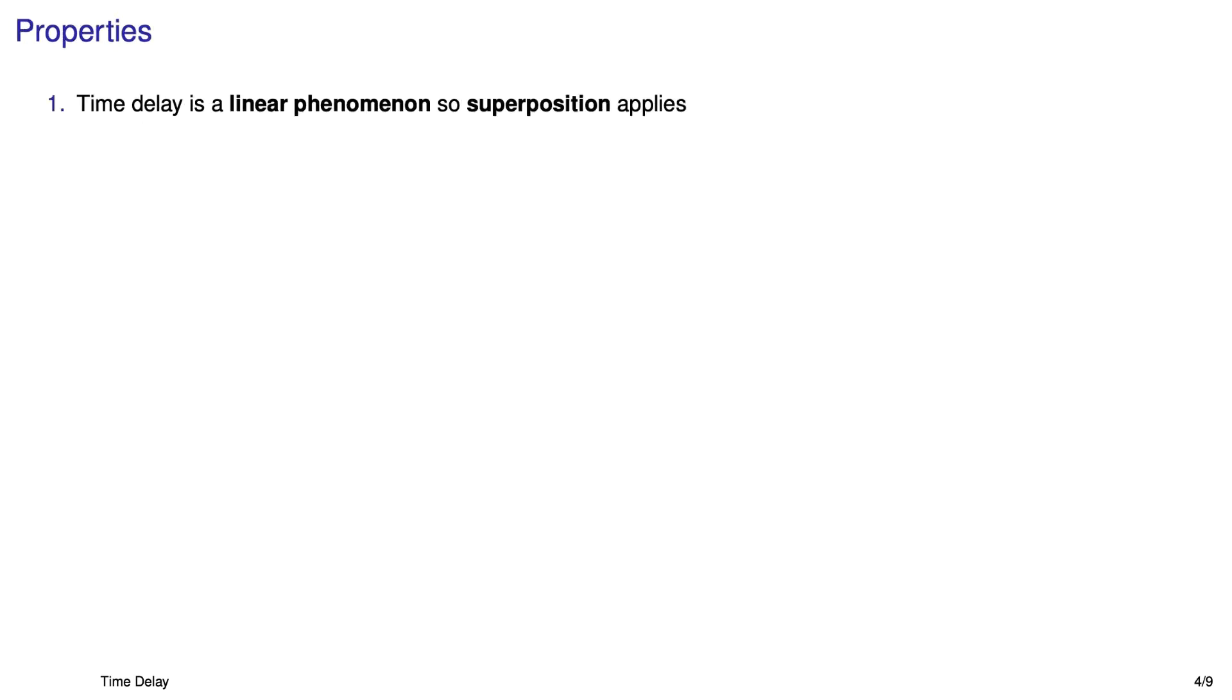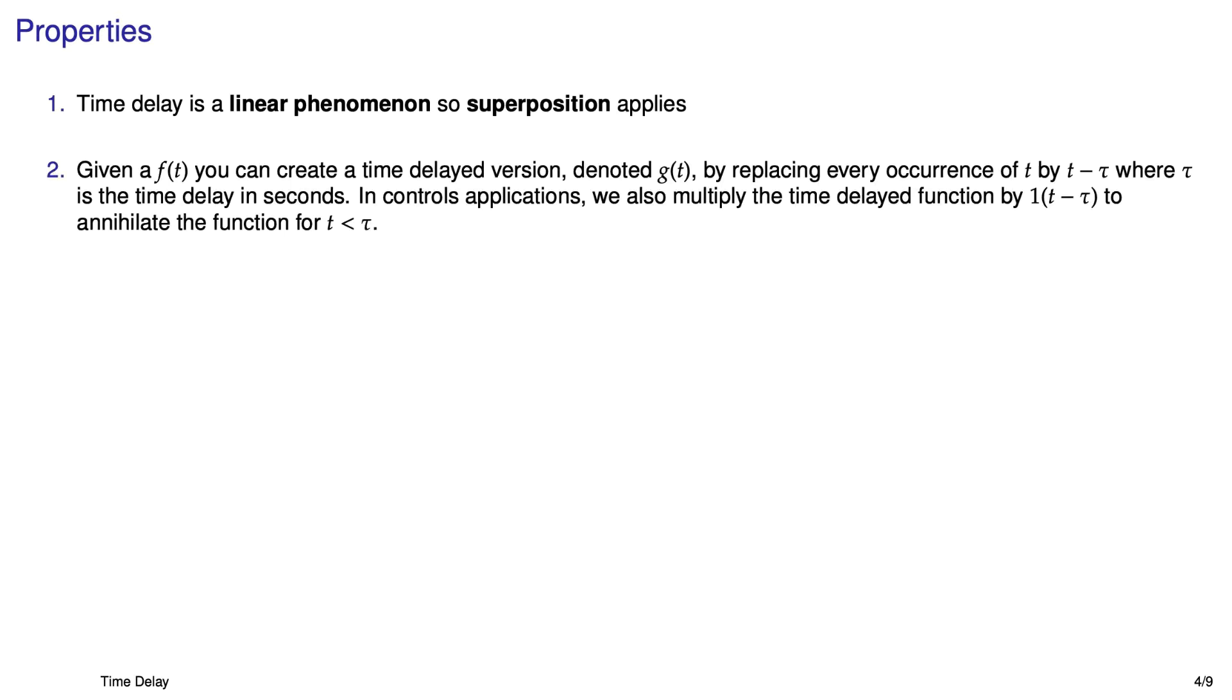Now we'll look at a few properties of the time delay. First off it's a linear phenomenon so superposition holds. Item two is pretty much what I was describing on the previous slide, just written in a slightly different way. Given some function f that's not delayed in time and let's say you want to create a version of it that is shifted in time by tau seconds, just replace the recurrence of t with t minus tau. And don't forget to multiply that function by the unit step also shifted in time by tau seconds.